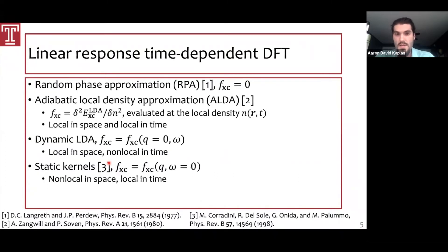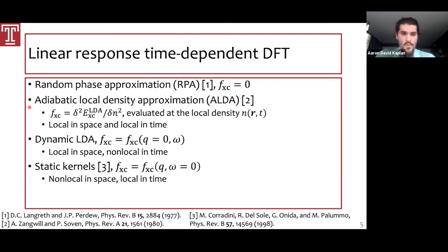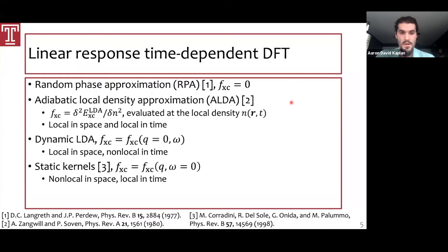Some common approximations to the XC kernel: the random phase approximation (RPA) is by far the simplest, taking the exchange correlation kernel to be zero. It recovers 100% of exact exchange but only short-range correlation, and is most accurate for simple models, similar to the LSD. Above this is the adiabatic local density approximation (ALDA), which takes the second functional derivative of LSD's exchange correlation energy evaluated at the local density — fully local in space and local in time. These two are good baselines for new kernels that might give us more information about real systems or Gellium.